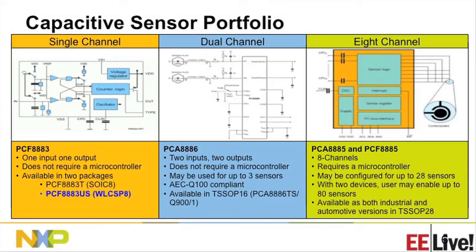The dual-channel device supports two channels with similar standalone technology where you do not need to write any code or software. Then you can have a multi-channel device, which is our eight-channel device. It has eight channels, but because of the algorithm built in to read these channels, you can enable up to 28 sensors using this one device — you can criss-cross four over four, and each particular intersection has its own unique identity. This device has an I²C interface, so it does require some sort of microcontroller support or master to talk to over I²C. But the software complexity is not very high — it's a simple and easy way to manage such a high number of sensors using one device.